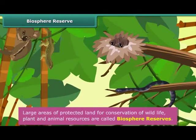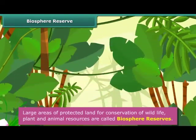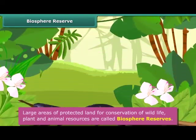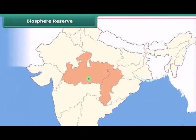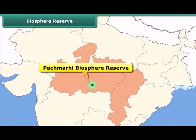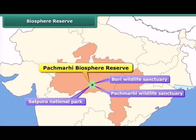Biosphere reserves help to maintain the biodiversity and culture of an area. A biosphere reserve may also contain other protected areas within it. For example, the Pachmari Biosphere Reserve consists of one national park named Satpura and two wildlife sanctuaries named Bori and Pachmari.